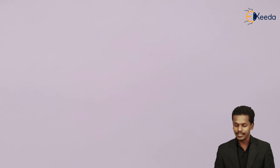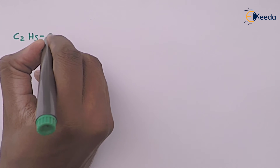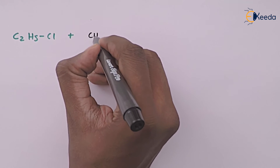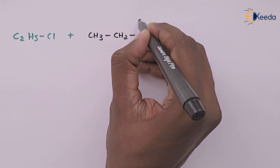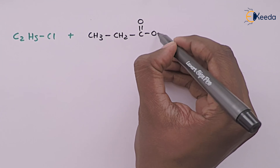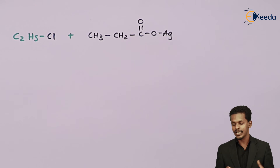Now let us consider another example. Suppose we take ethyl chloride (C₂H₅Cl) and react it with the silver salt of propanoic acid, which is CH₃CH₂C(=O)OAg. So this is the silver salt of propanoic acid.